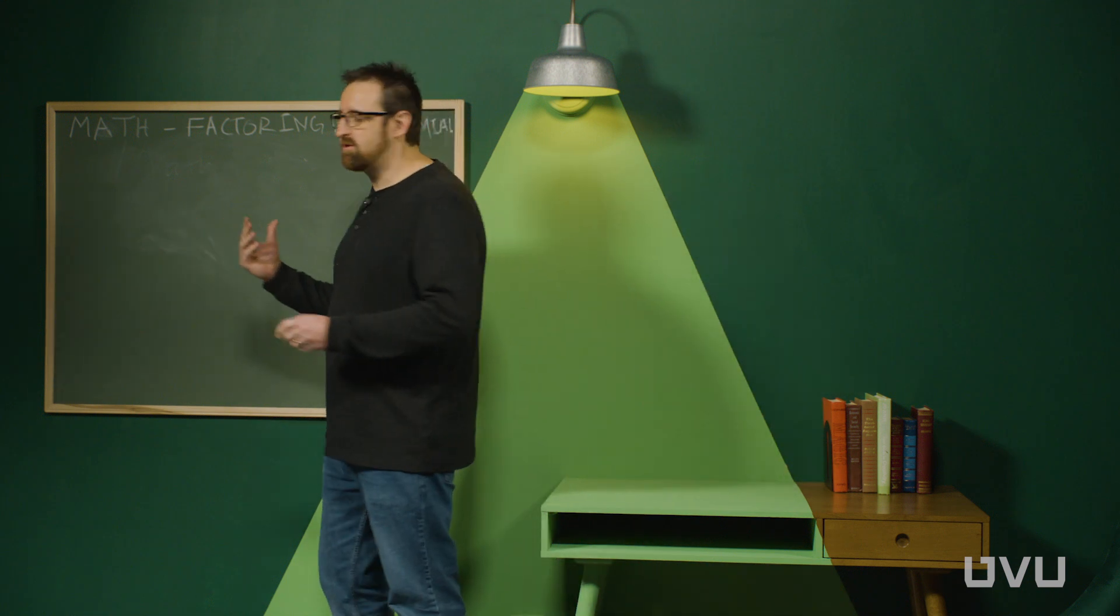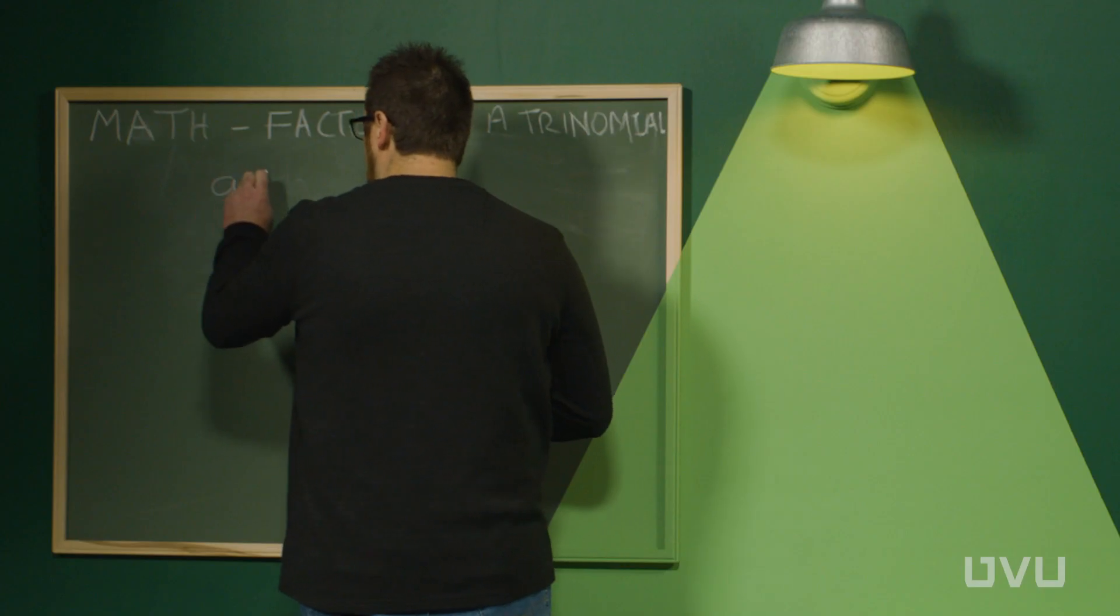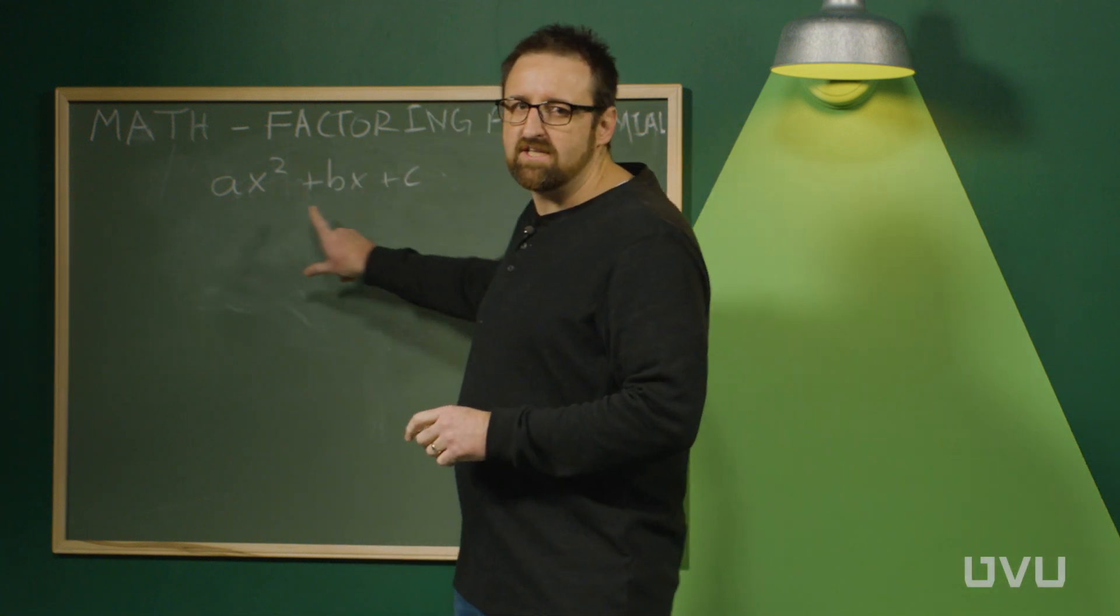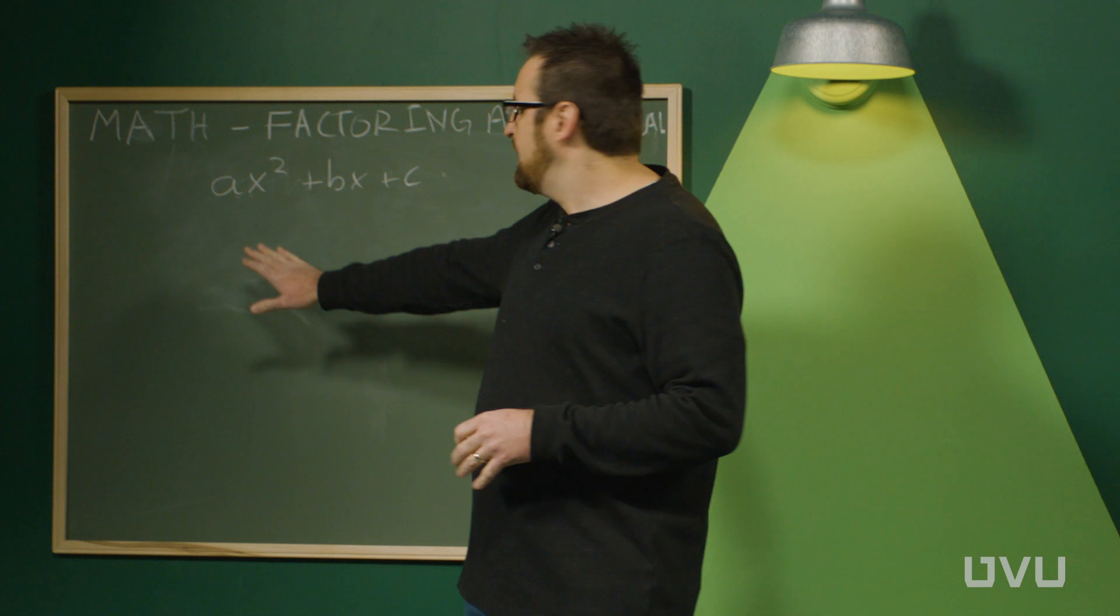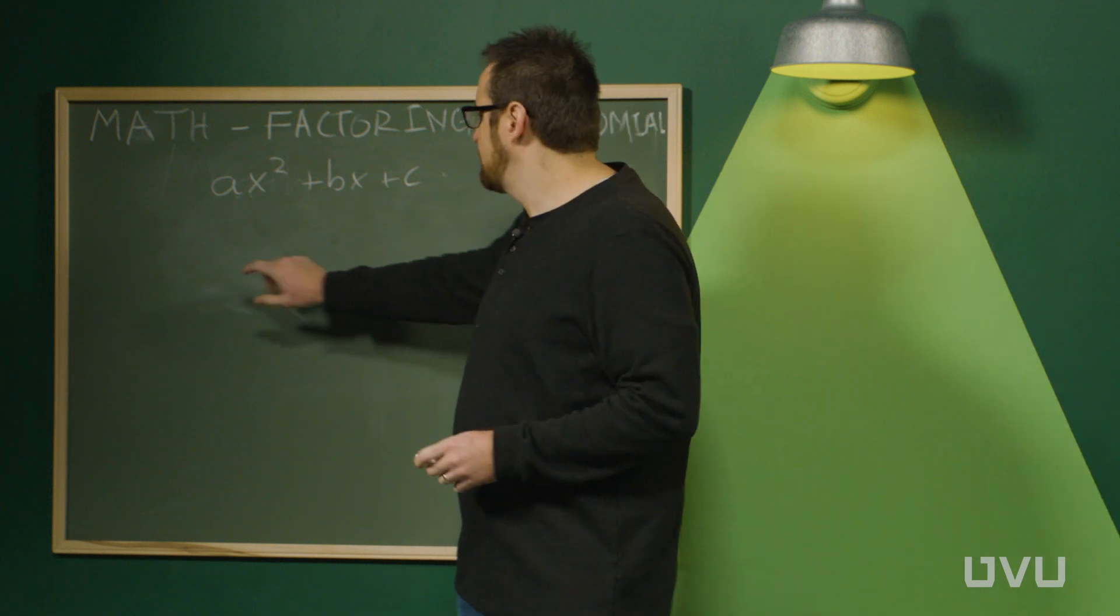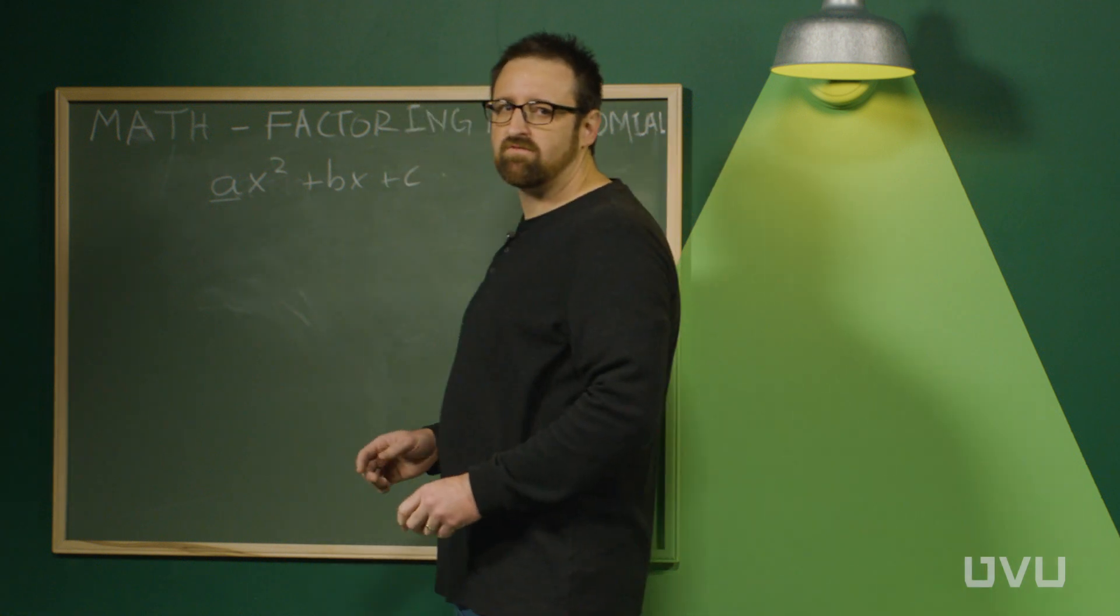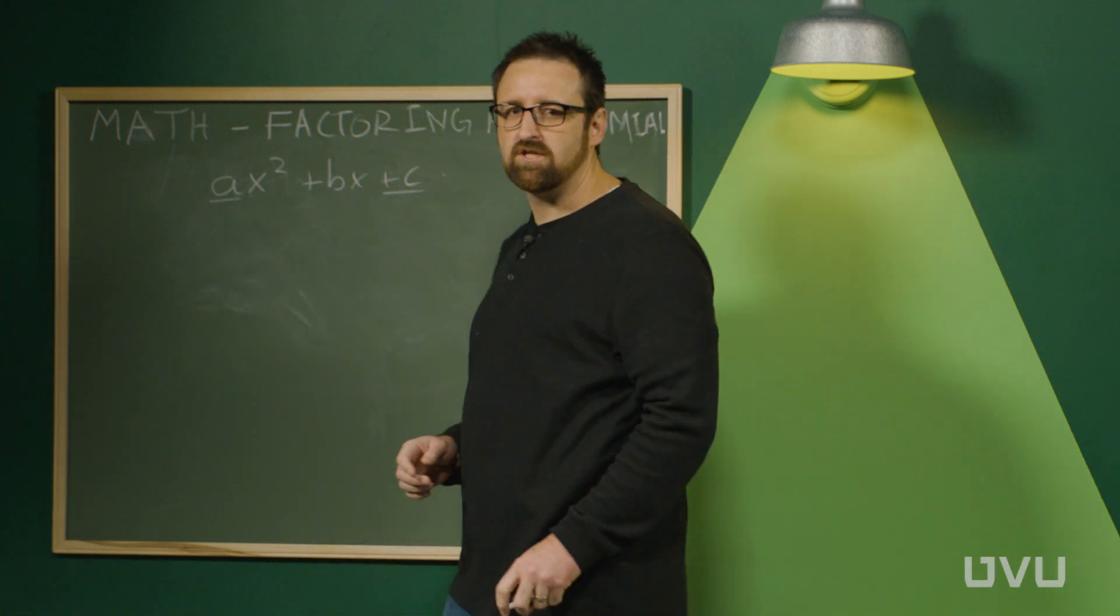If you write down a general trinomial, it's usually written like this where the a, b, and c are called coefficients and they just stand for any kind of numbers. This is called the AC method because it's going to do something with the coefficient in front of the x squared and the coefficient at the end.